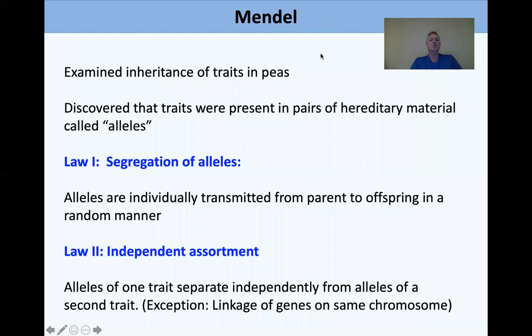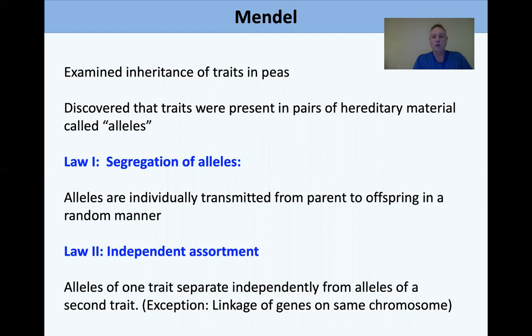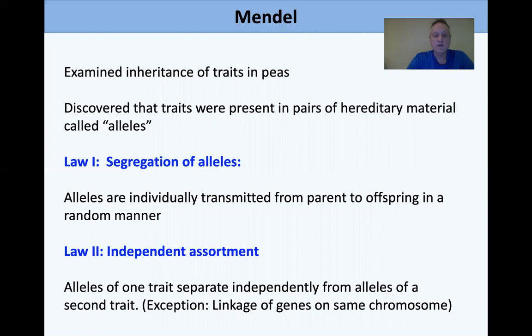Gregor Mendel was an Austrian monk who examined inheritance traits in peas. He discovered traits were present in pairs of hereditary material, naming them alleles, and he came up with two laws. The law of segregation states that alleles are individually transmitted from parent to offspring in a random manner. The law of independent assortment states that alleles of one trait separate independently from alleles of a second trait — with the exception of linkage, where alleles on the same chromosome won't obey this law.